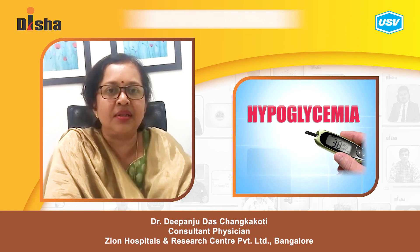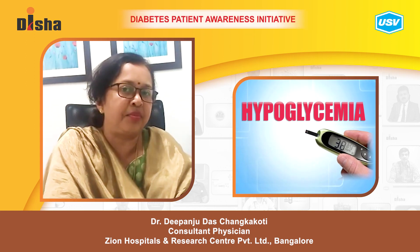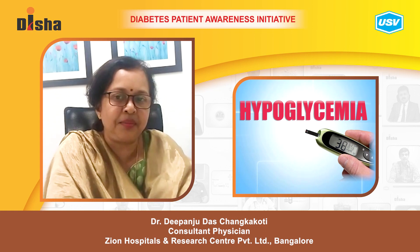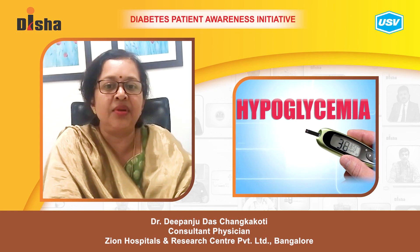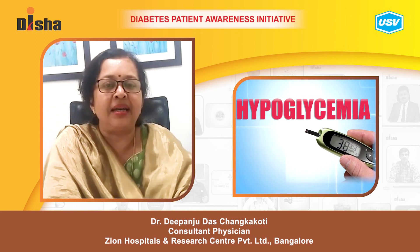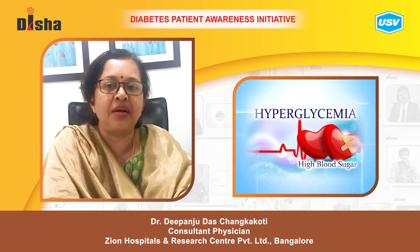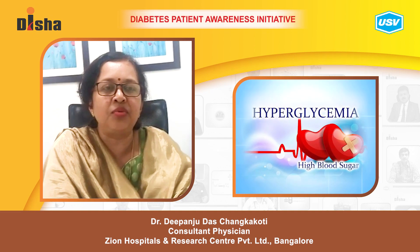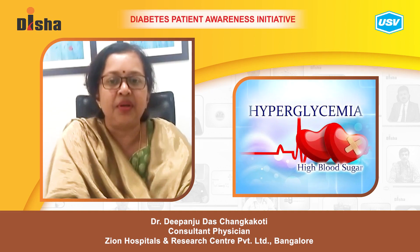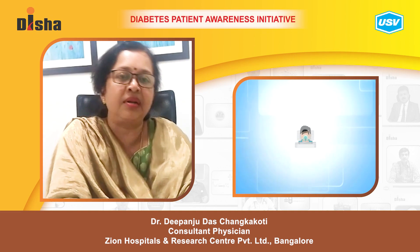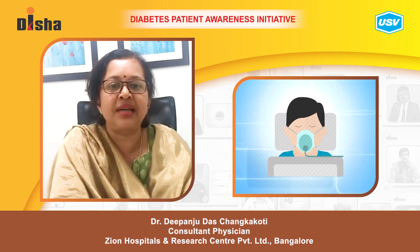Too much insulin causes low blood glucose — that is hypoglycemia — which can lead to insulin shock. Insufficient insulin causes blood glucose to become too high, leading to hyperglycemia, which can lead to diabetic coma.